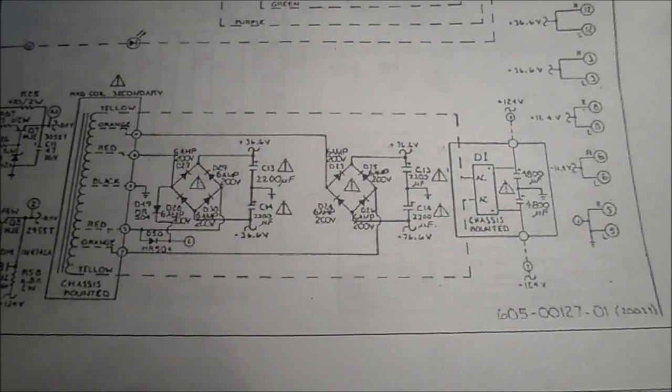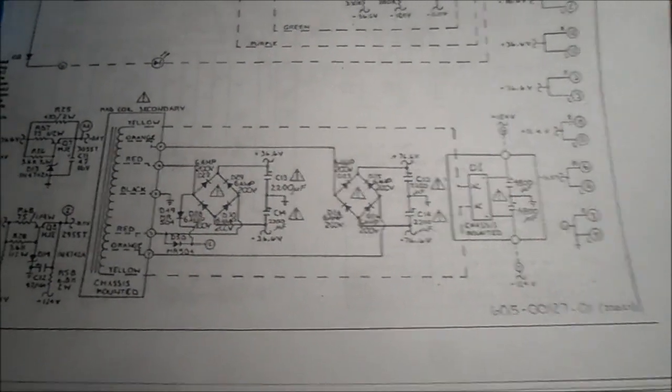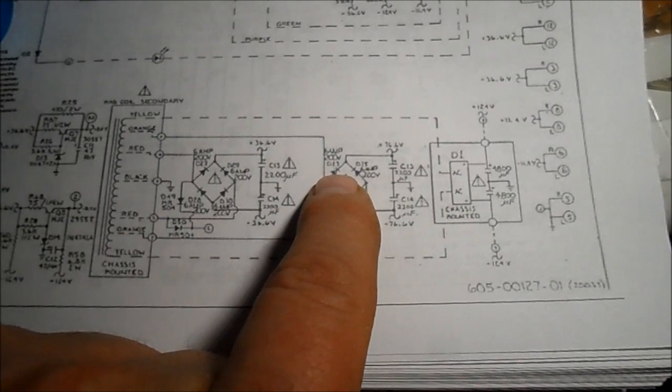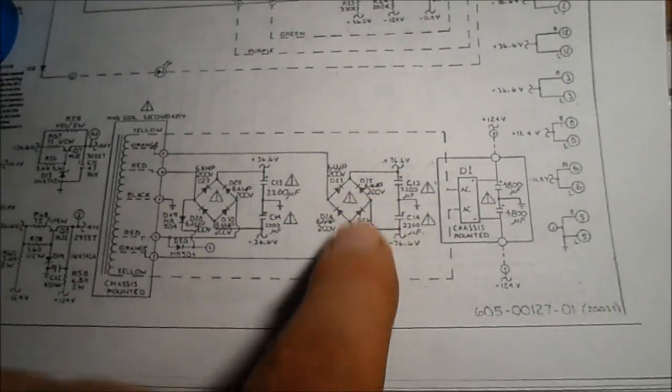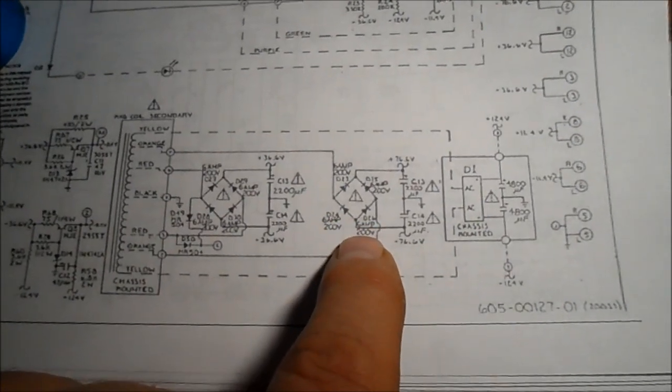Back on the cover here, there seems to be some confusion on these capacitors. The positive supply is at the junction of D23 and D25, and the negative is the junction of D24 and D26.